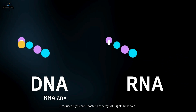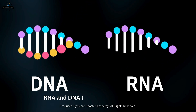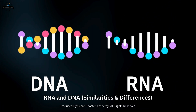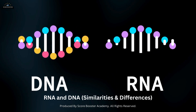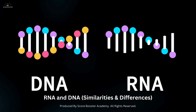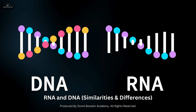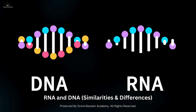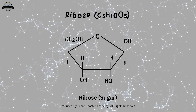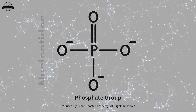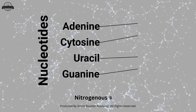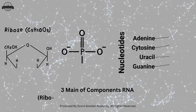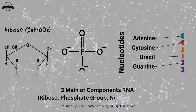While RNA and DNA share some structural similarities, several key differences make RNA uniquely suited to its roles in the cell. At the most fundamental level, RNA is composed of three main components: a sugar called ribose, a phosphate group, and a nitrogenous base. Together, they form the backbone and the informational code of the RNA molecule.